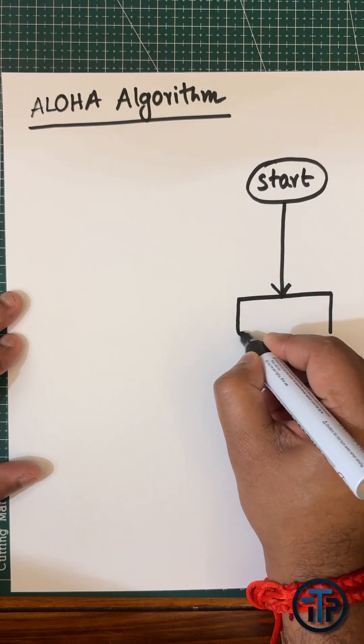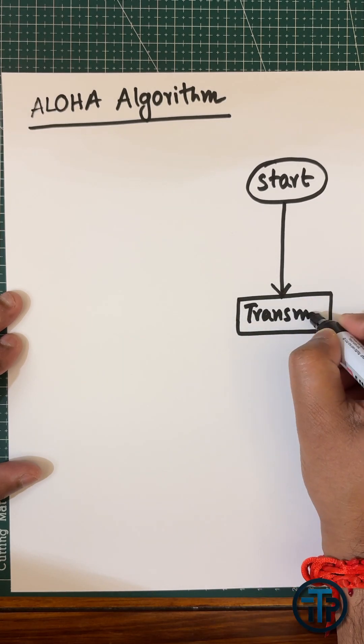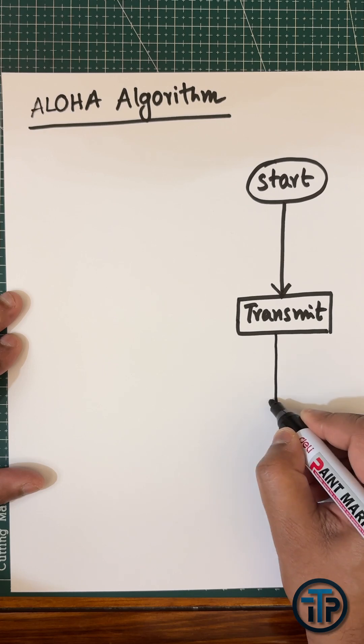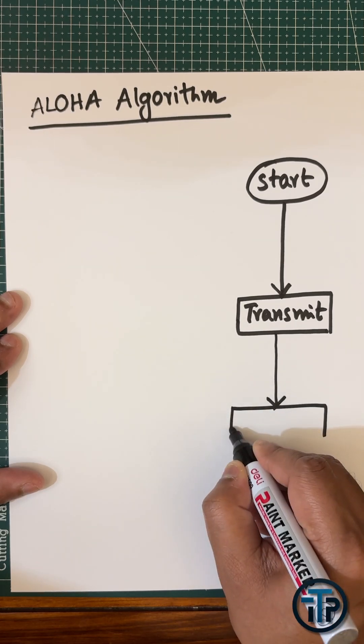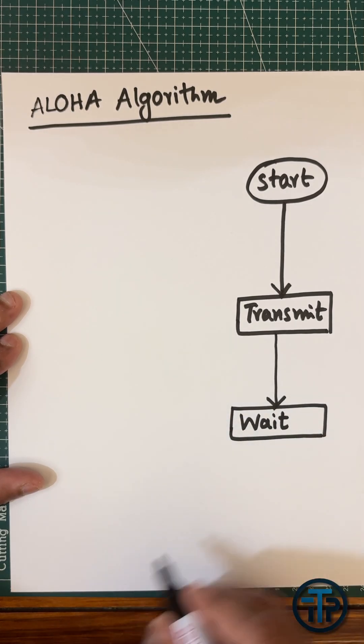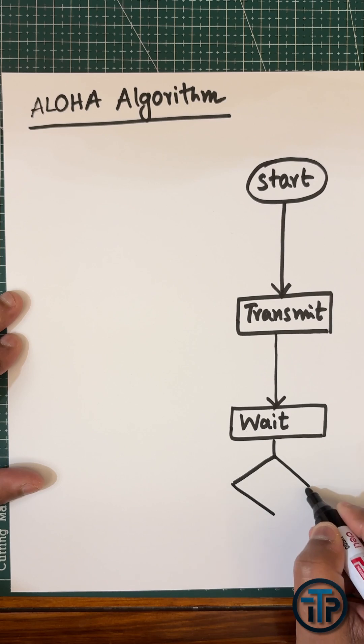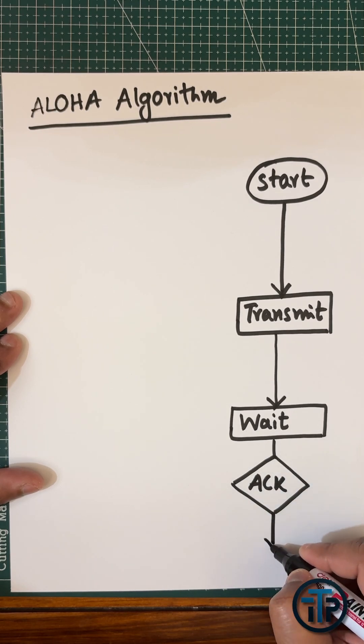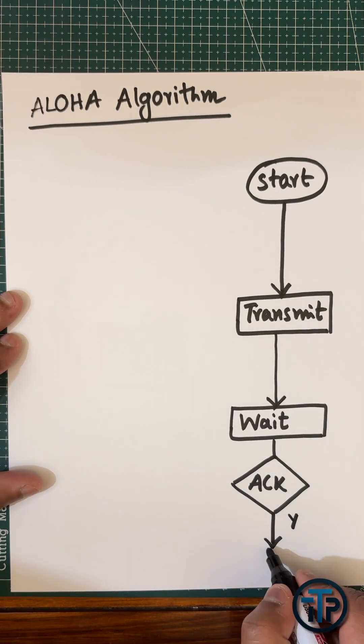Then you have to transmit the data. After that, you have to wait for some amount of time to get the acknowledgement. When you get that acknowledgement, if